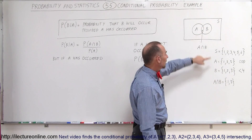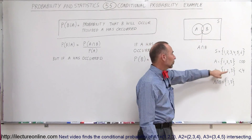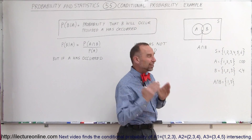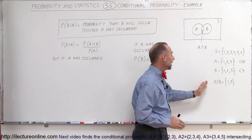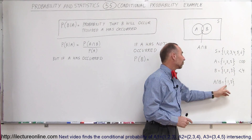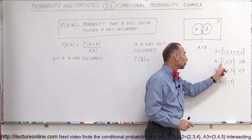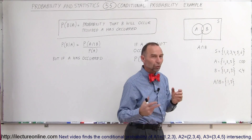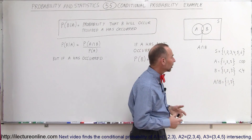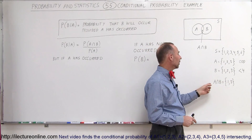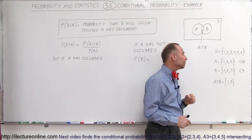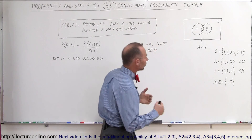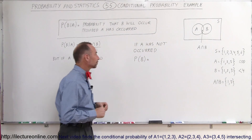Event B indicates that you throw a number less than 4: 1, 2, or 3. Therefore, the intersection of A and B is 1 and 3 — those are the two numbers, the two possible outcomes, that are common to both A and B at the same time. That's called the intersection.